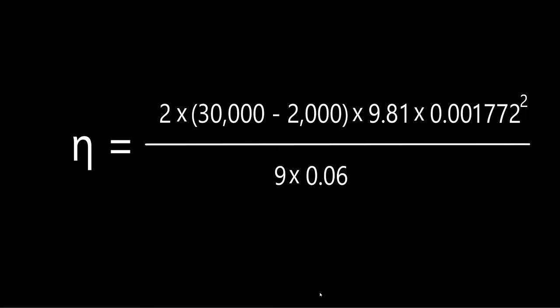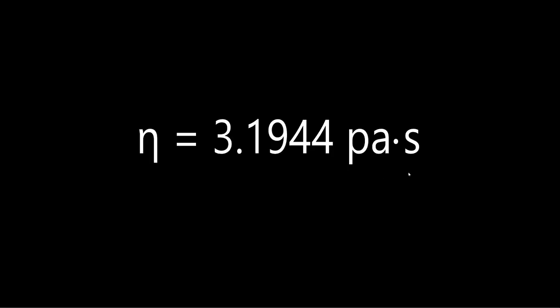I'd recommend that you take a look at this formula and compare it with the original one we saw at the beginning. We inserted the density of the ball, which is 30,000, minus the density of the liquid, which is 2,000, and multiplied it with both 2 and the gravitational acceleration, which is 9.81, times the radius of our sphere, 0.001772 meters to the power of 2. And all that, we divide it by 9 times the velocity, which is 0.06.